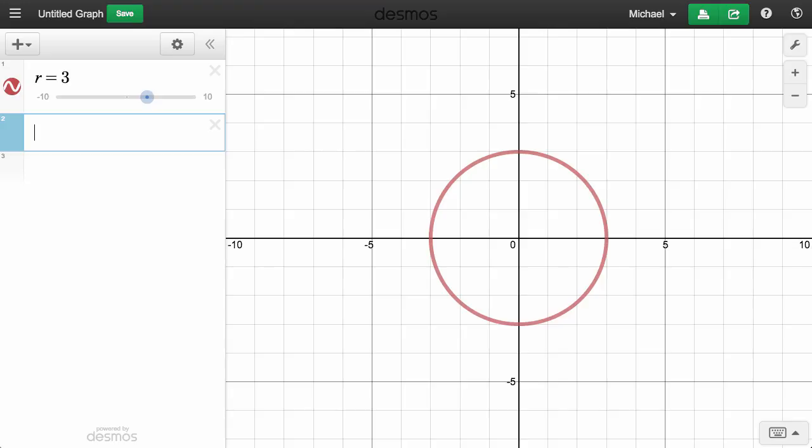Next, let's graph a looped limacon with something like r equals 2 cosine theta plus 1. Desmos will automatically interpret expressions with r and theta as polar.